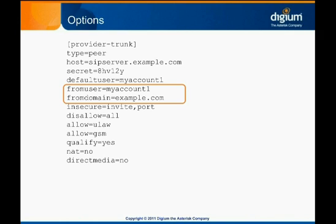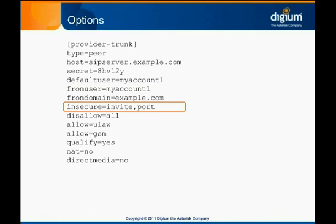Different providers authenticate using different mechanisms. Many providers expect and require that they not be challenged to furnish authentication credentials when delivering a call. To allow this, we set insecure equals invite comma port. The invite portion means that we will allow any invite without challenge, and the port portion means that we don't restrict the port used. You may also configure the trunk to allow or disallow specific codecs.